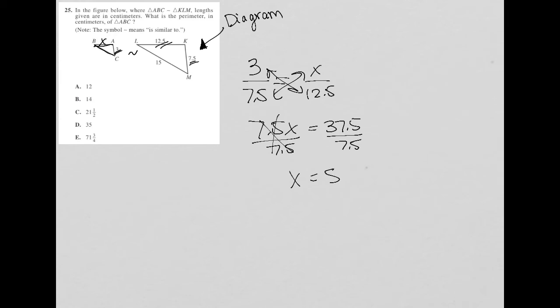So now I know that this side here is 5. Now I'm going to do the same thing for side BC. I'm going to call it Y. And I know that its corresponding side is this 15 here. So once again, I'm going to set up a proportion and say that same 3 over 7.5 relationship should be equal to Y divided by 15. So now when I cross-multiply here, I have 7.5Y is equal to 3 times 15, which is 45.